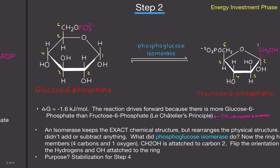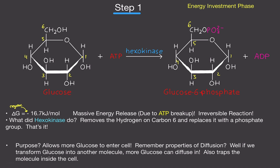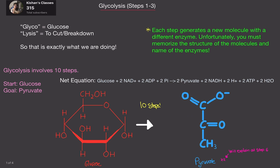We're going to do the other ones later. I've laid out this video to make it super easy to understand every single step of glycolysis — well, steps 1, 2, and 3. I've laid out the reactants, the enzyme, and the product, as well as the delta G values. And in my own words, I explained what is going on, what is the difference between the molecules, and what the purpose of this was. So this should be the easiest glycolysis video you've probably ever seen.